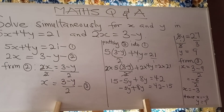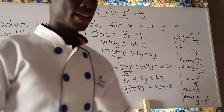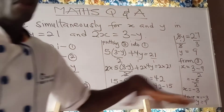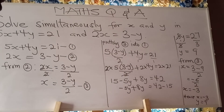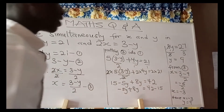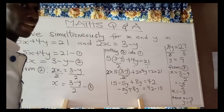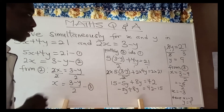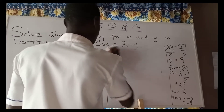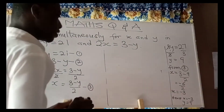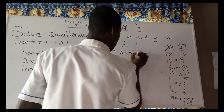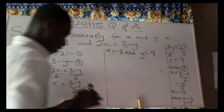Now, how do we verify that the answer we've got is the correct answer? You put the values into any of the equations to see whether you get the answer given in the equation. After solving, we got x equal to negative 3 and y equal to 9.